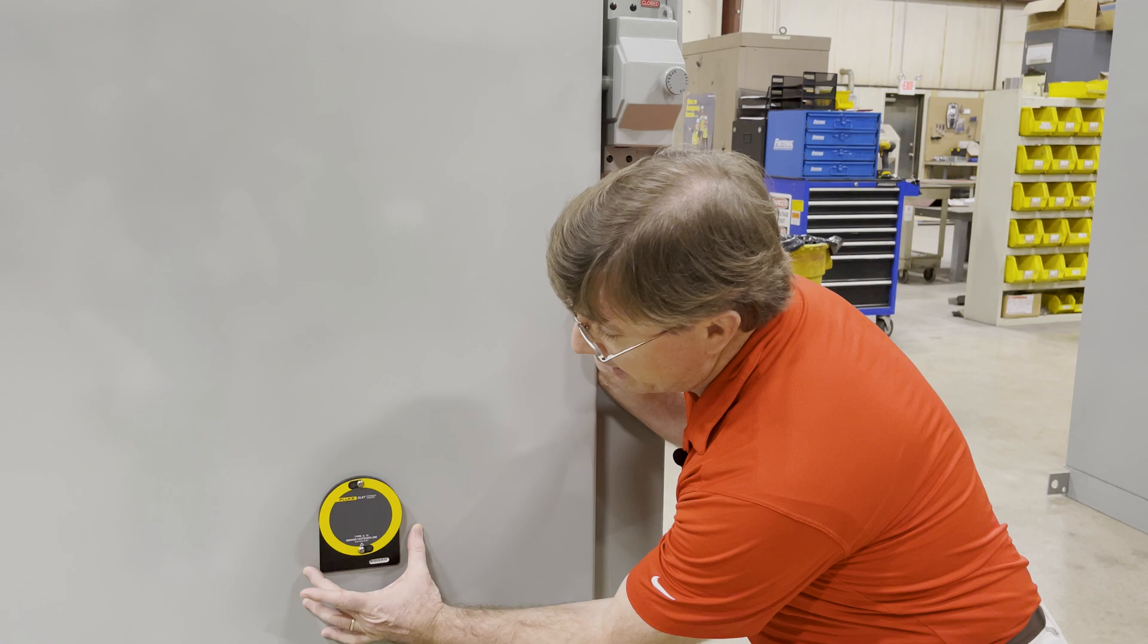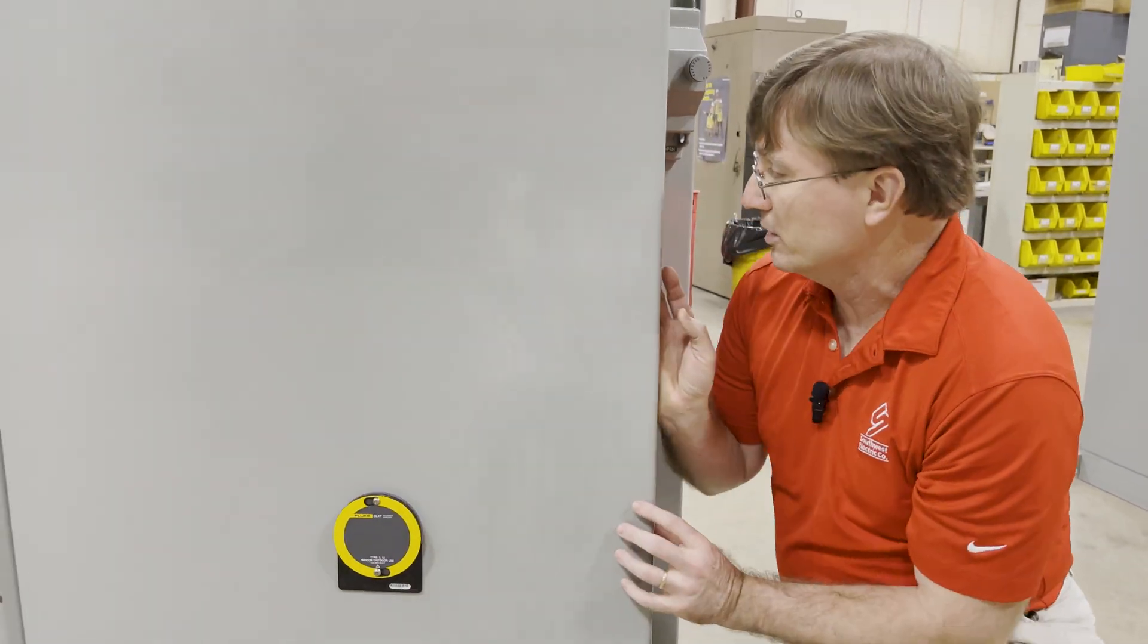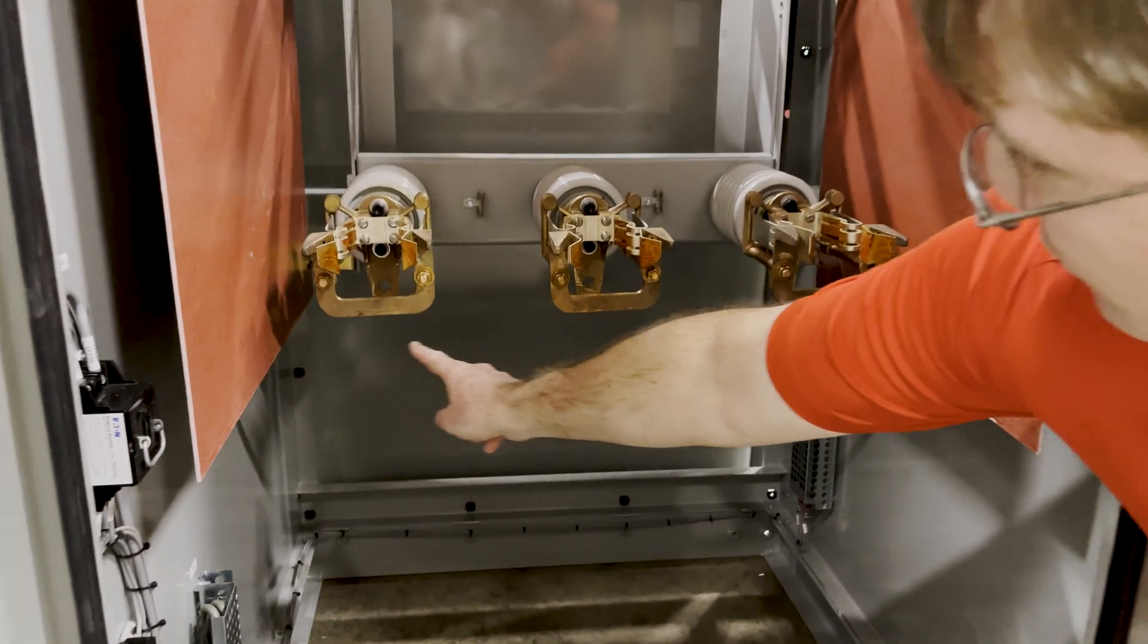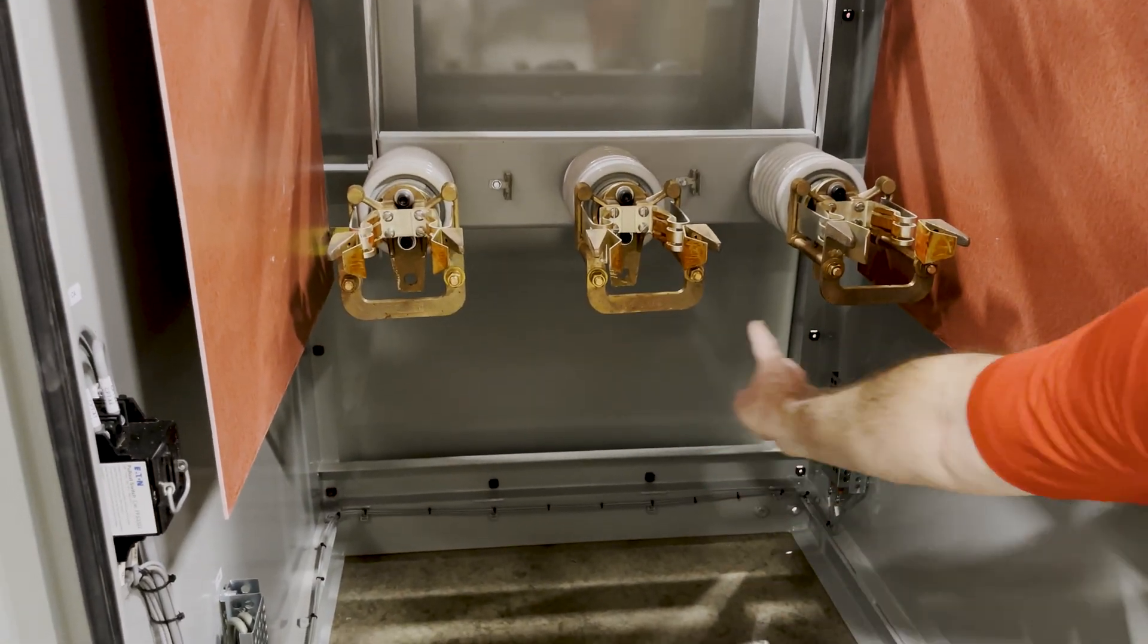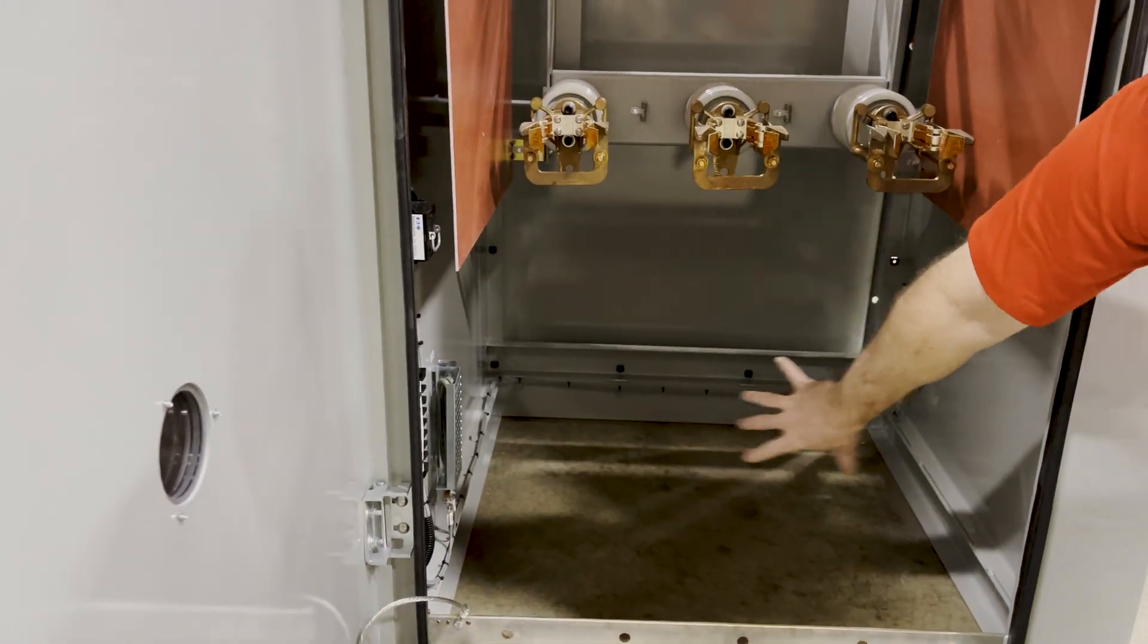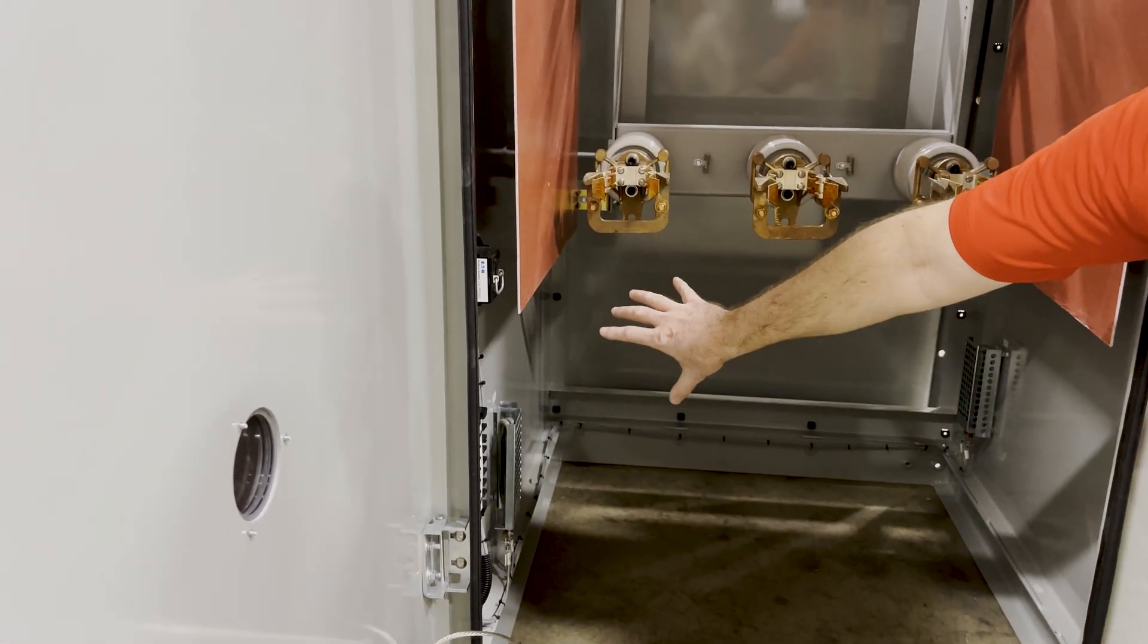This window is located on the bottom of this door because that's where your cable connections are for the switch. These cables are going to come up from the ground, connect here, and that's the perfect spot for your window to view those cables and look for hotspots.